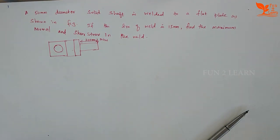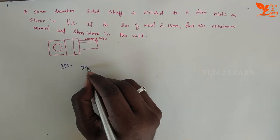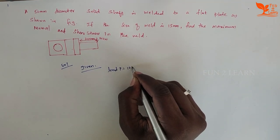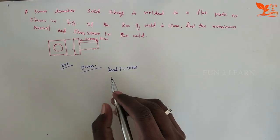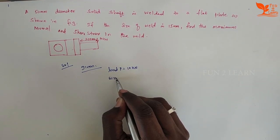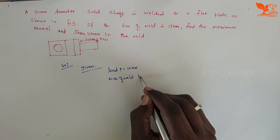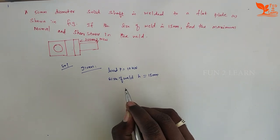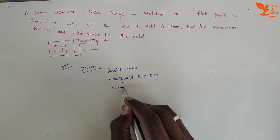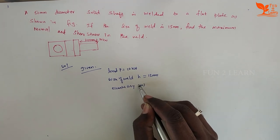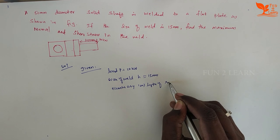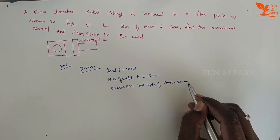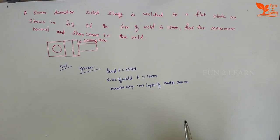In the solution, given data: What is the load? P is 10 kN. Size of weld — we denote this as H — size of weld is 15mm. Eccentricity. Length of rod is 200mm.